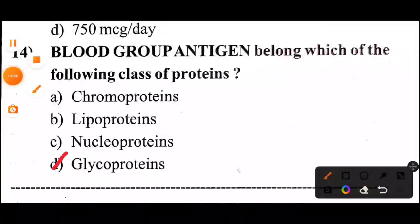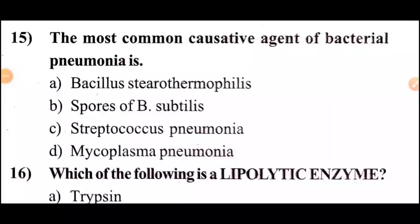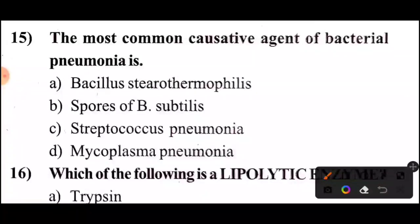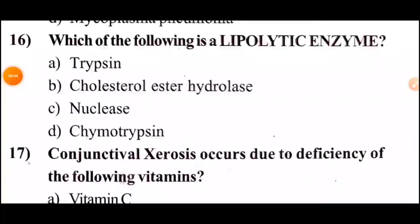Question 15: The most common causative agent of bacterial pneumonia is — answer: Streptococcus pneumoniae. Next question.